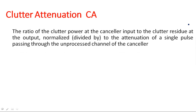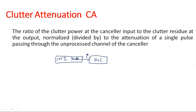Another parameter is clutter attenuation (CA). Clutter attenuation is the ratio of the clutter power at the canceller input to the clutter residue at the output, normalized to the attenuation of a single pulse passing through the unprocessed channel of the clutter canceller. The output of the MTI radar is connected to a delay line canceller. At the input of the delay line canceller we measure how much clutter power is present, and at the output we measure the remaining clutter residue after cancellation.